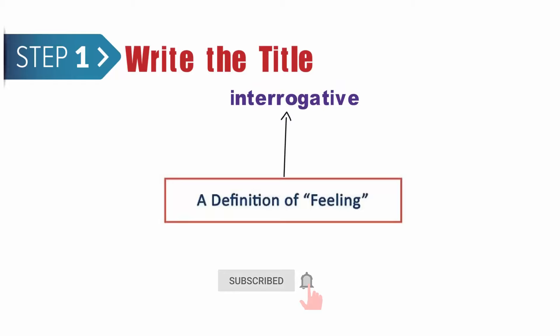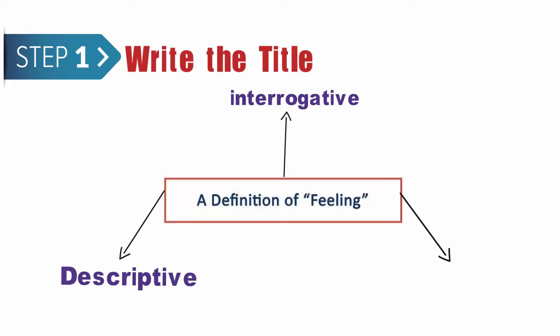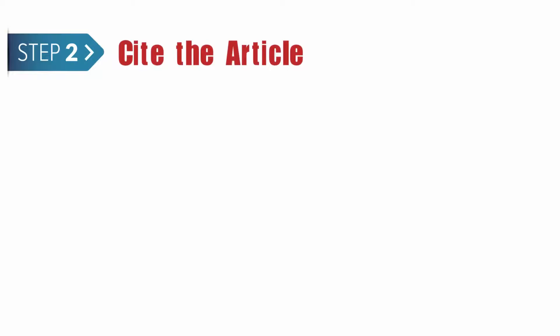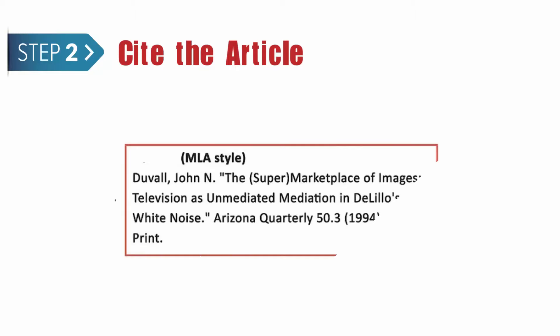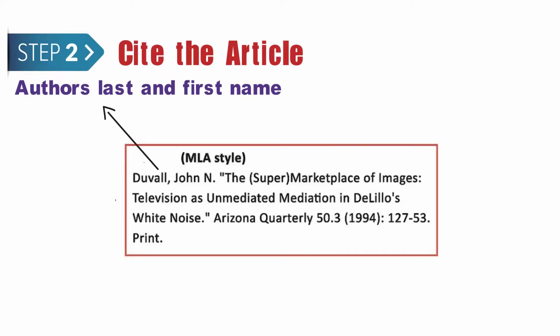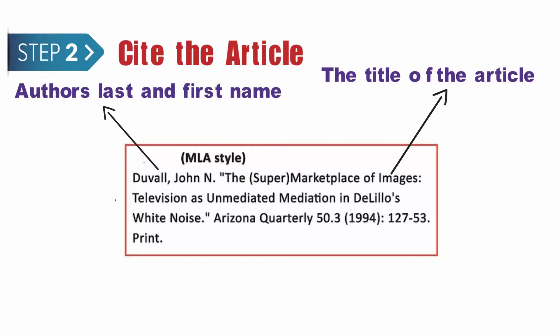The title can be either interrogative, descriptive, or declarative. Step 2: Cite the article. Create a proper citation for the reviewed article and input it following the title. The most important thing to keep in mind is the style of citation specified by your instructor. For example, an article citation in the MLA style should include the author's last and first name, the title of the article, journal title and issue, publication date, pages, and then print.